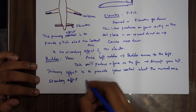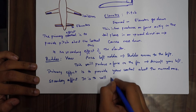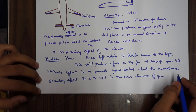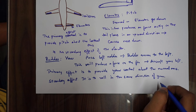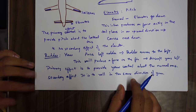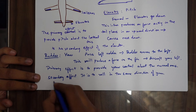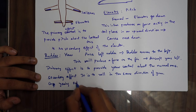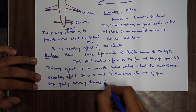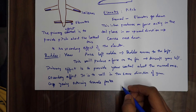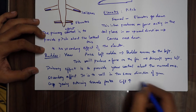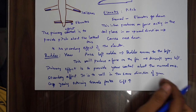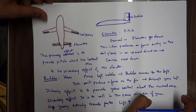The secondary effect of the rudder is to roll in the same direction of yaw. Why does this happen? When you yaw, the outer wing travels faster. If the outer wing travels faster, it generates more lift. If lift increases on the outer wing, the aircraft rolls into the direction of the yaw.